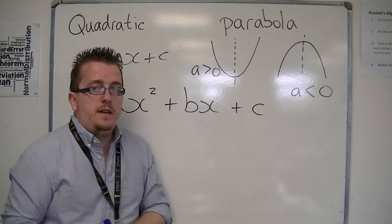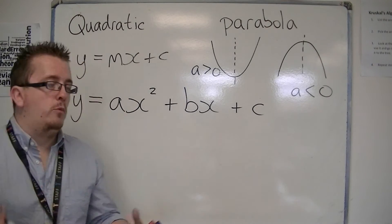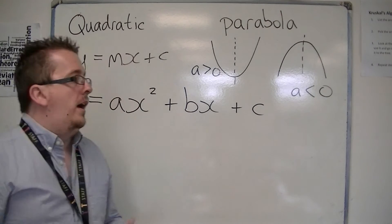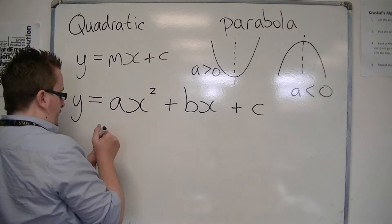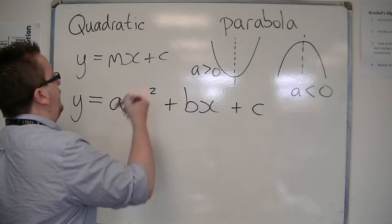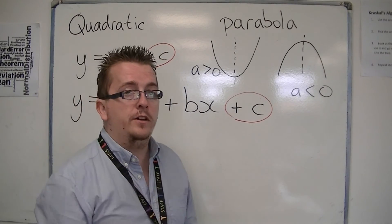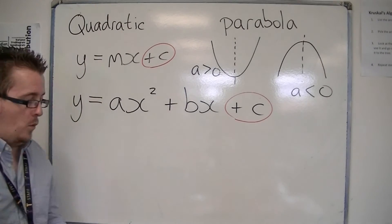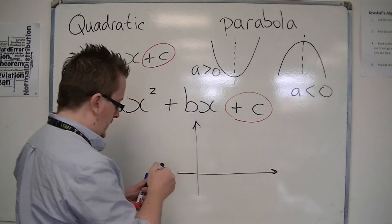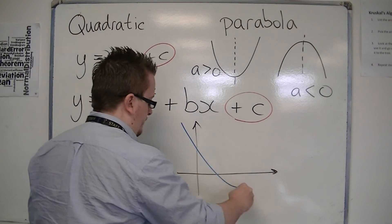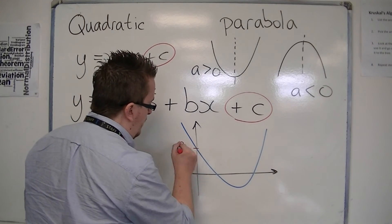The value of c is really the main other thing we can work with easily. The b is a little bit more difficult to explain in terms of how it changes the curve. But c has a similar function to the c from your linear graph — it tells you where the curve crosses the y-axis. So if we draw in some axes and draw a parabola, this point will be the value of c.